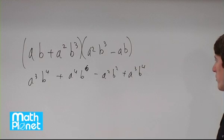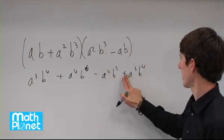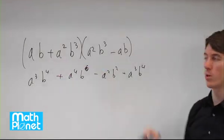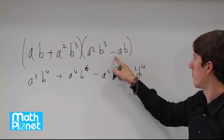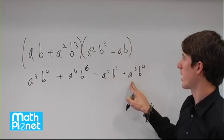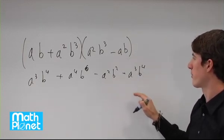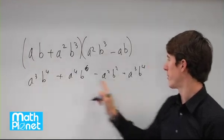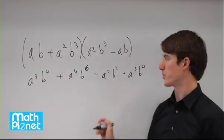So we have some terms that may cancel. This should be a negative, because we had plus a squared times b cubed minus a times b. So this was a cubed b to the power of 4, but it's a minus. So this is positive, this is minus — these terms cancel directly.